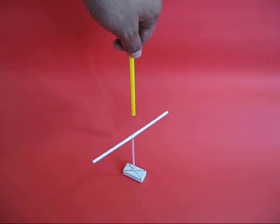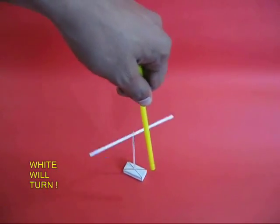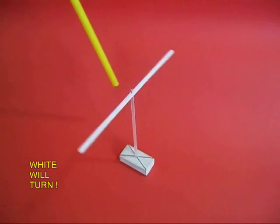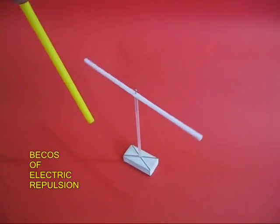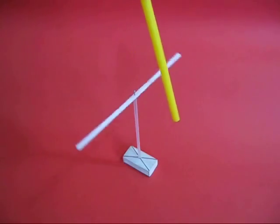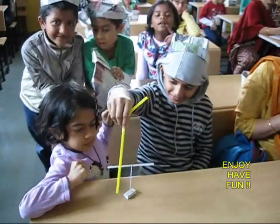As you bring it close to the white straw, the white straw will be repelled. Without touching one straw with the other, you can make the white straw obey the commands of the yellow straw.